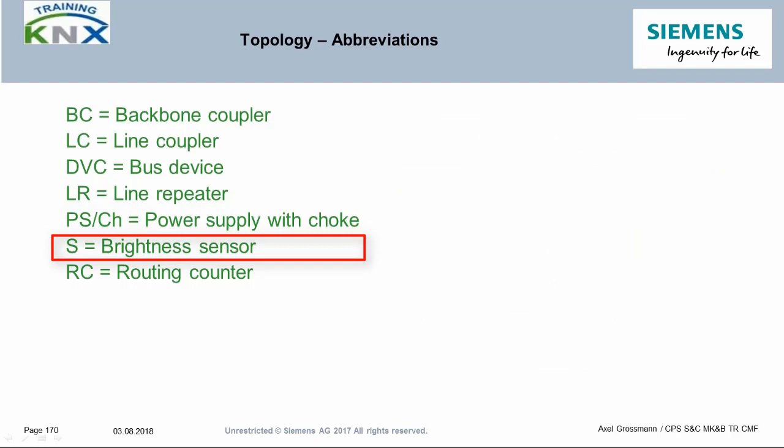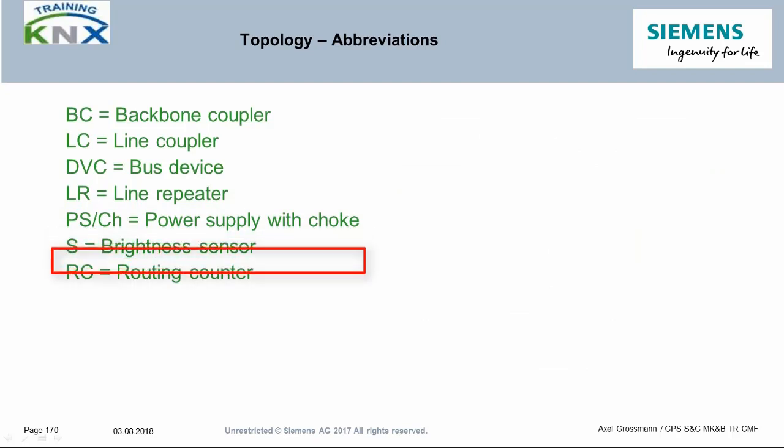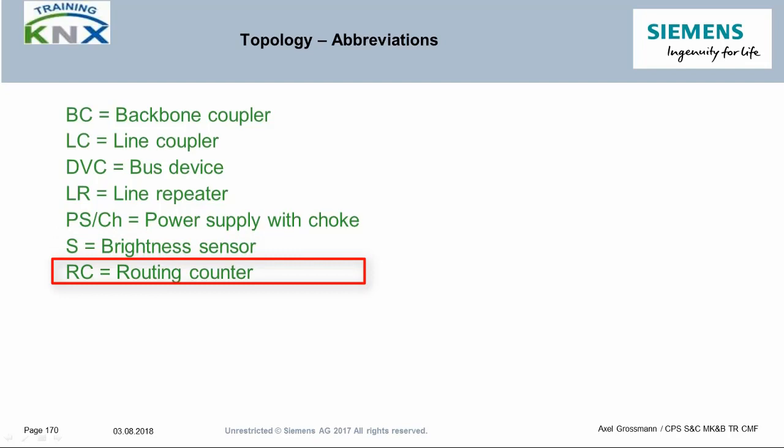S: Brightness Sensor. RC: Routing Counter — part of the bus telegram which shows how many couplers have already routed it. Also called hop count.